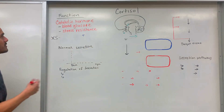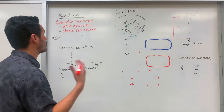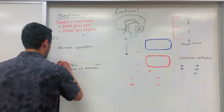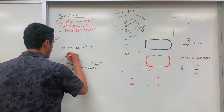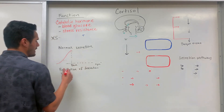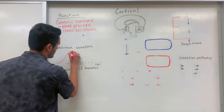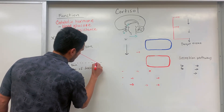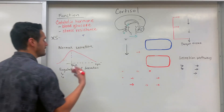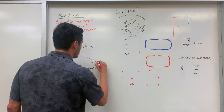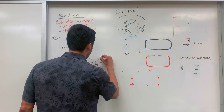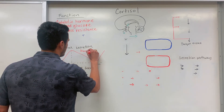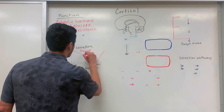So the next thing is: what's the normal secretion of cortisol? Typically, cortisol levels peak in the morning around 7–8 a.m., and then throughout the day these levels start to decrease, reaching their lowest levels around 10–11 p.m. Then the cycle continues. This is what's known as a diurnal pattern.